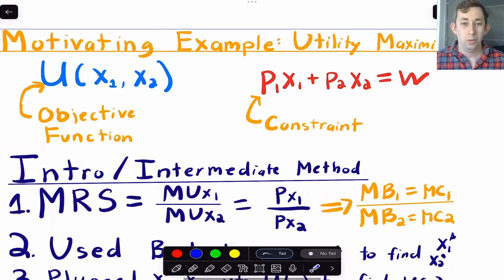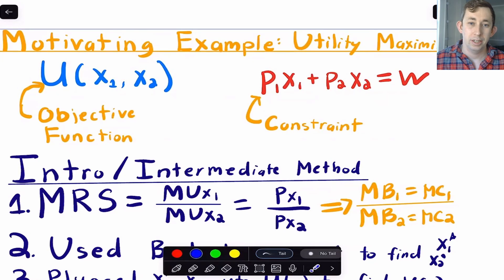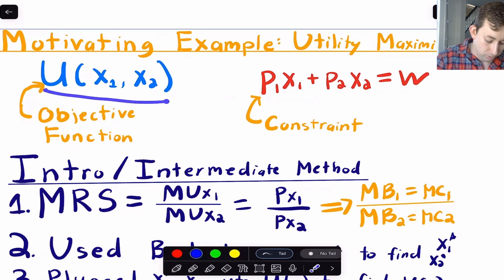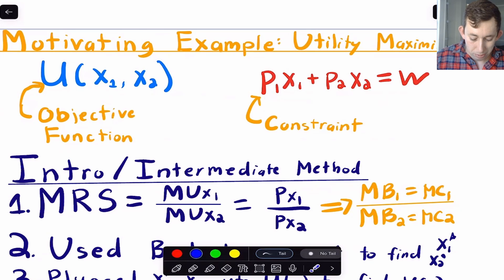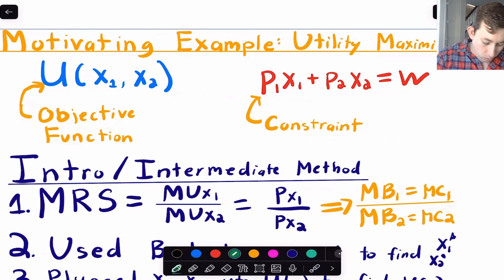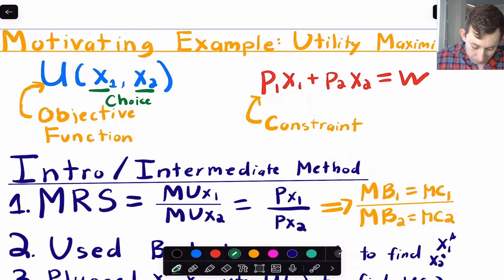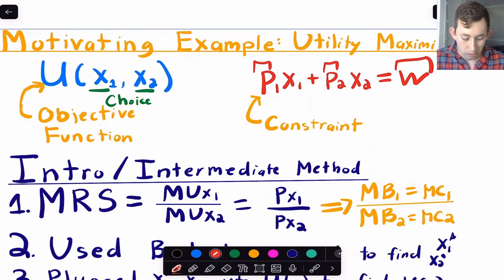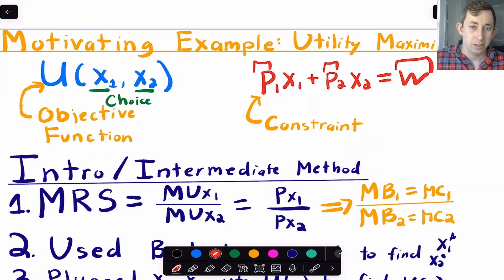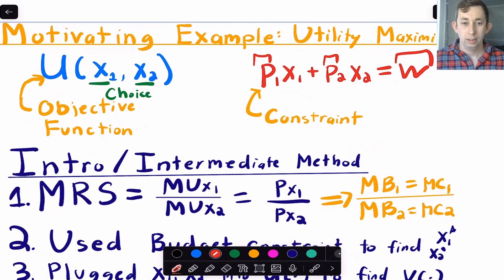The way I want to motivate Lagrangian optimization is that it's really no different than what you've been doing in your micro or macro classes — it's just a different tool to get to the same answer. As an example, consider utility maximization: we have a utility function, two goods x1 and x2, a budget p1·x1 + p2·x2 = w, and choice variables x1 and x2. Parameters p1, p2, and w are just given to us in the problem.